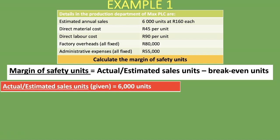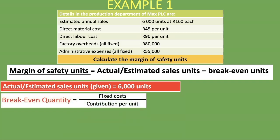The only one we have to calculate is our break-even units. If you checked out our previous lesson on the break-even quantity, we went through the exact same example. The formula is quite easy: it's the fixed costs divided by the contribution per unit. The fixed costs are already given — 80,000 rand for factory overheads, which are all fixed, and 55,000 rand for administrative expenses, which are also all fixed.